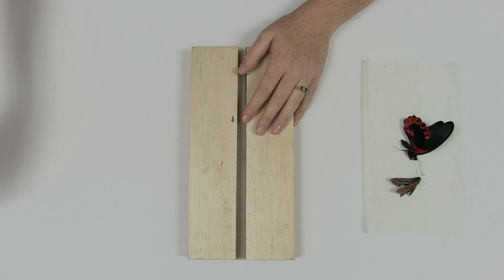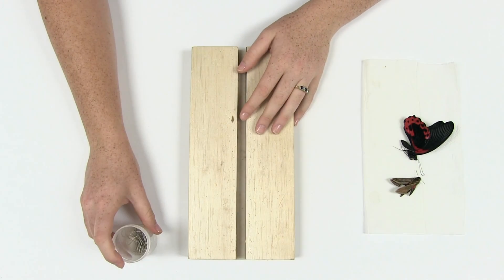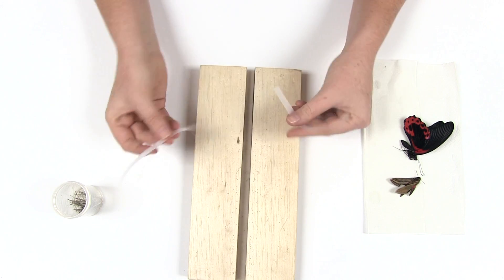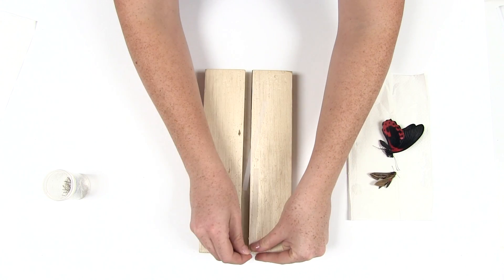To pin a butterfly or any other insect for which the wings should be displayed flat, you will need a spreading board, some straight non-insect pins, and some transparent waxy paper cut into strips.